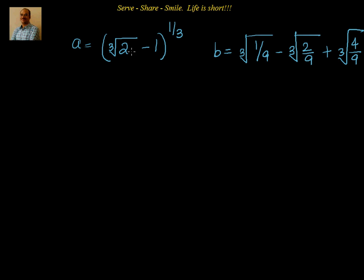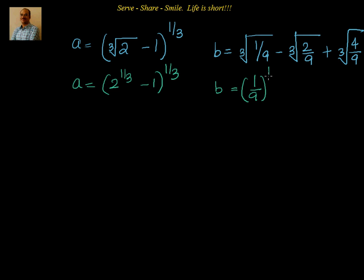What we will do is try to simplify the given information for a and b in terms of exponents. I will write a equal to 2^(1/3) minus 1, whole to the power of 1 by 3. Then we will spend a couple of minutes on b: it is nothing but (1/9)^(1/3) minus (2/9)^(1/3) plus (4/9)^(1/3).